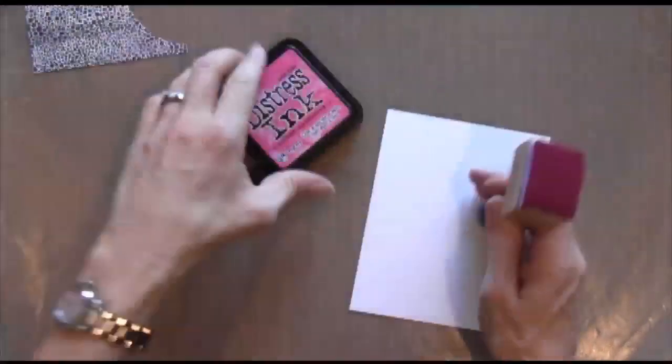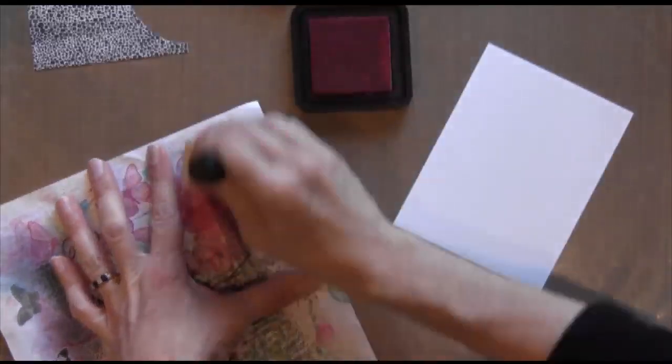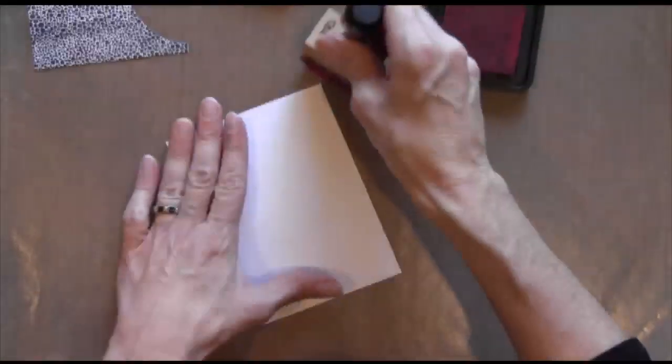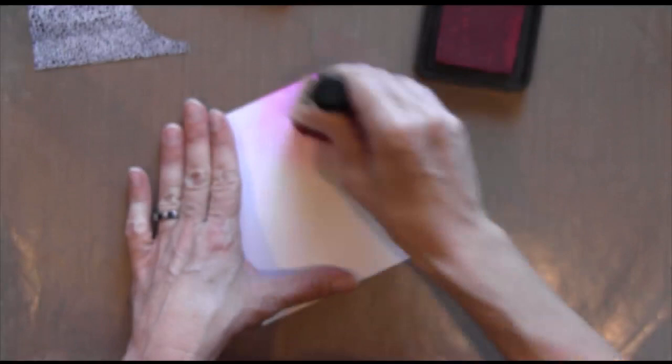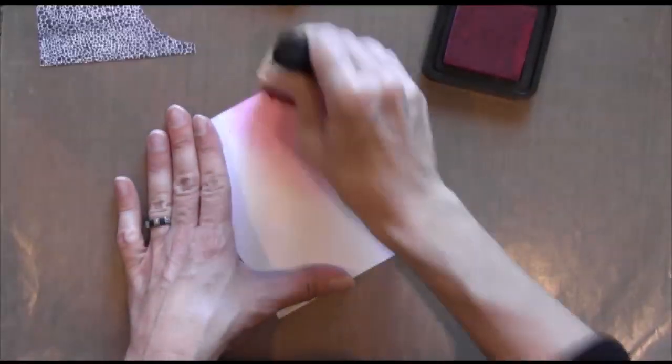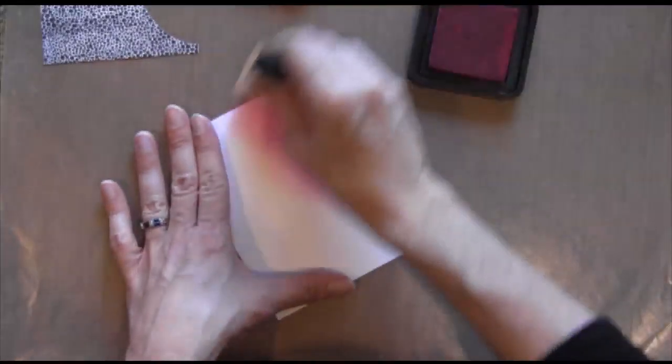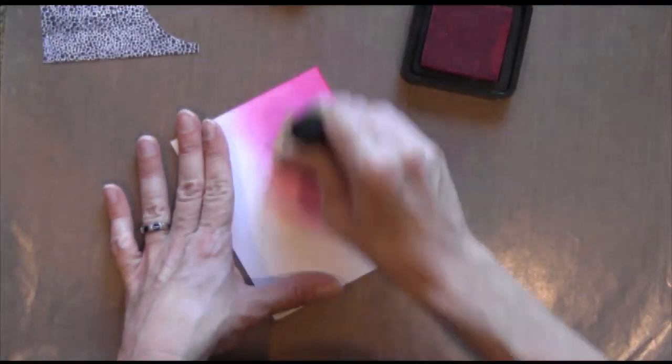And then I have this new ink called Pickled Raspberry. I'm priming my applicator on a piece of scratch paper because this ink pad is really juicy. When you have too much ink on your ink applicator, you're more likely to get those rectangular blocks. So I'm using really light pressure here.